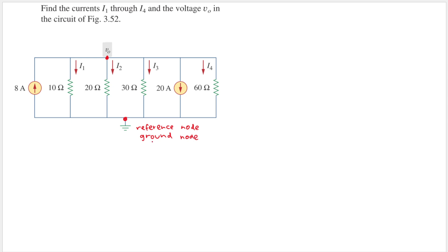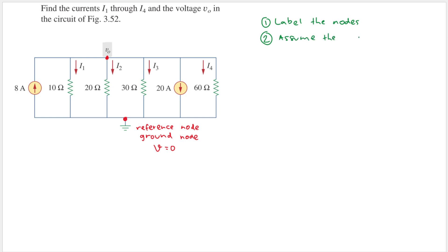That means the voltage at the reference node is equal to zero. The first step of nodal analysis is to label the nodes, and the second step is to assume the direction of the currents.